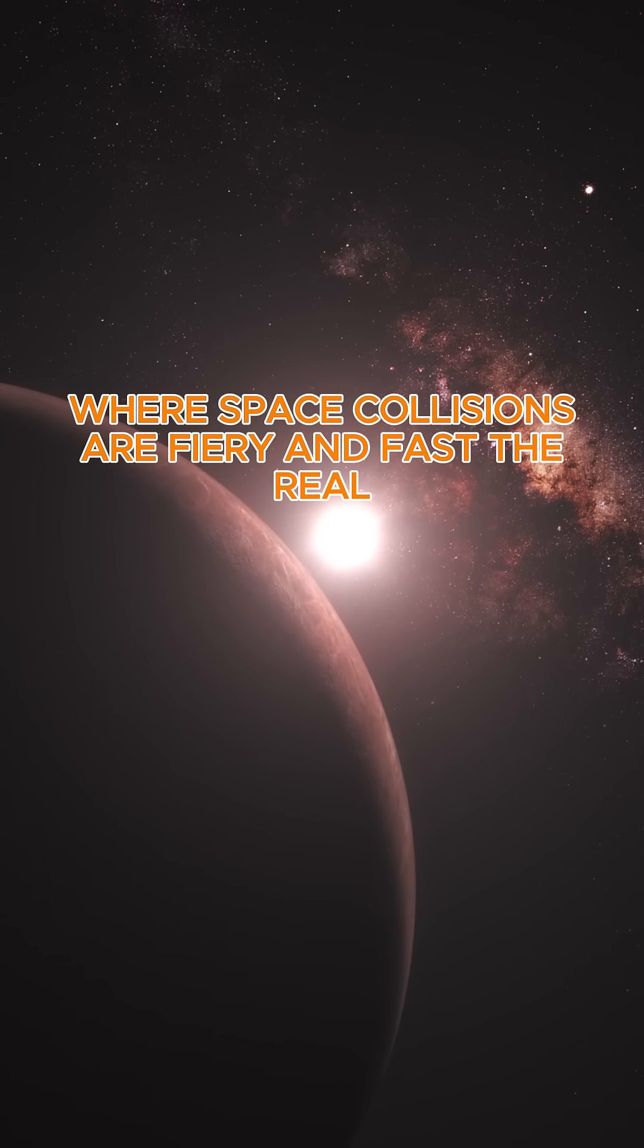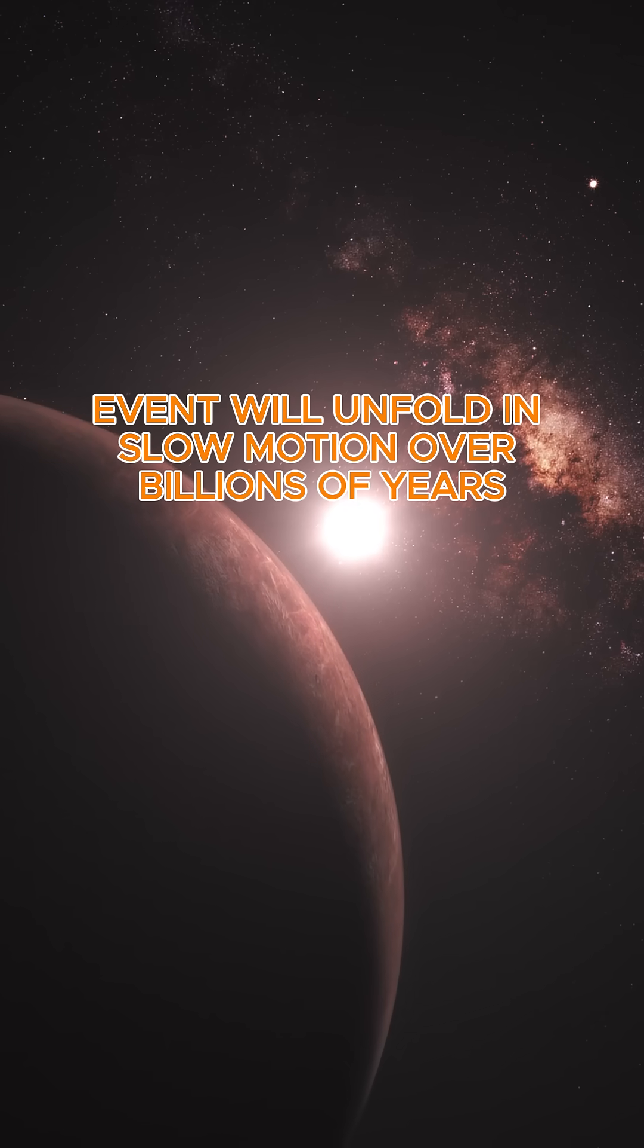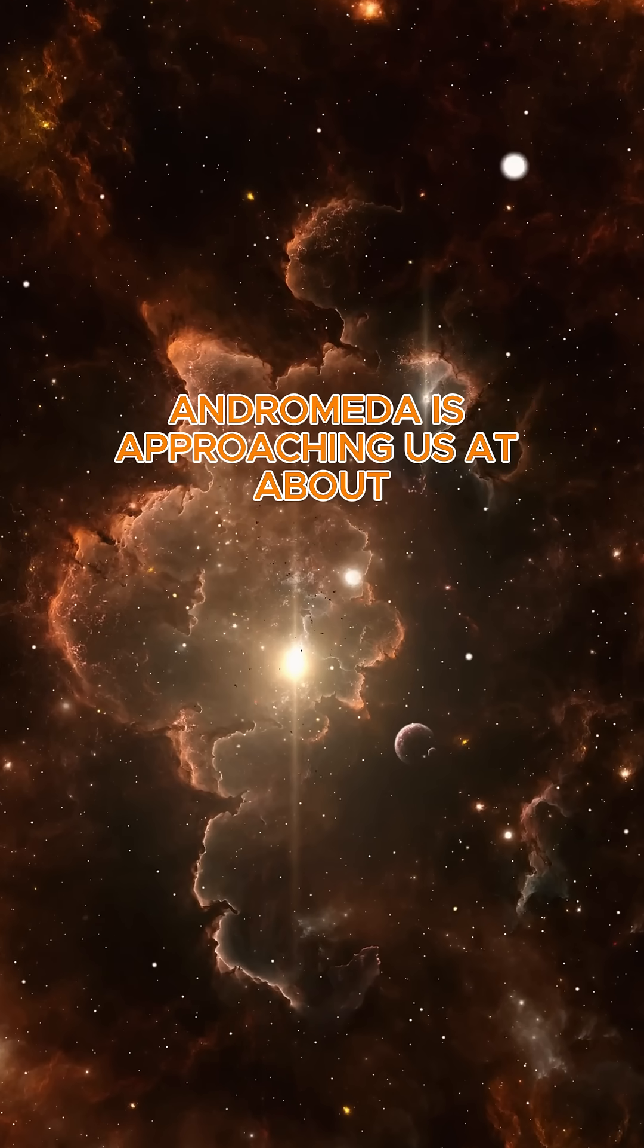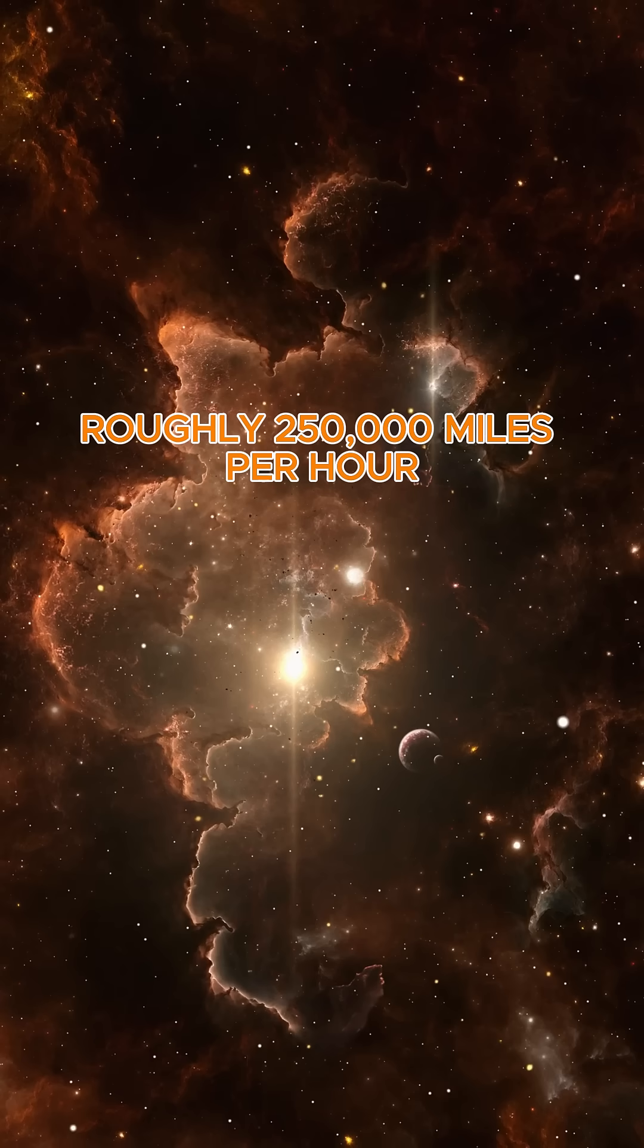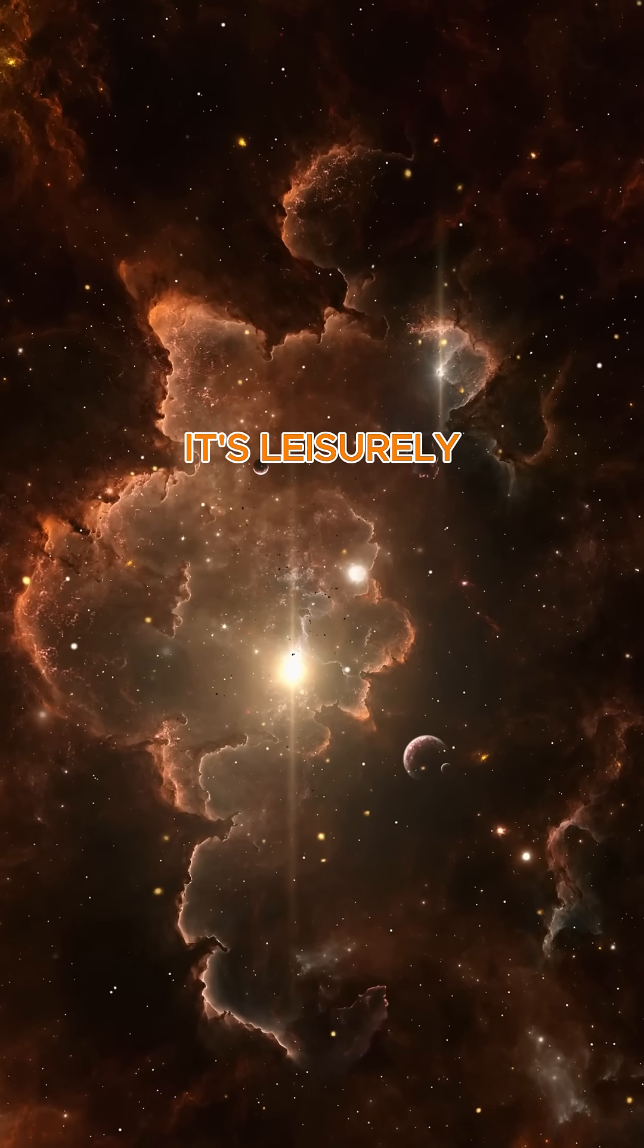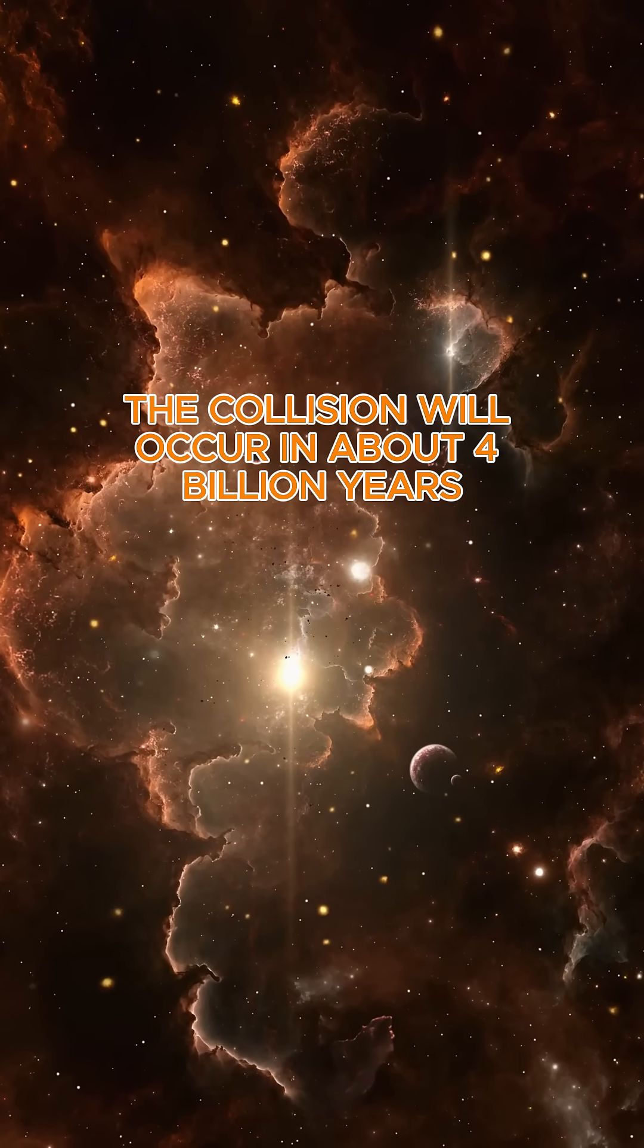Unlike in movies where space collisions are fiery and fast, the real event will unfold in slow motion over billions of years. Andromeda is approaching us at about 110 kilometers per second, roughly 250,000 miles per hour. While that sounds fast, in galactic terms, it's leisurely. At this rate, the collision will occur in about 4 billion years.